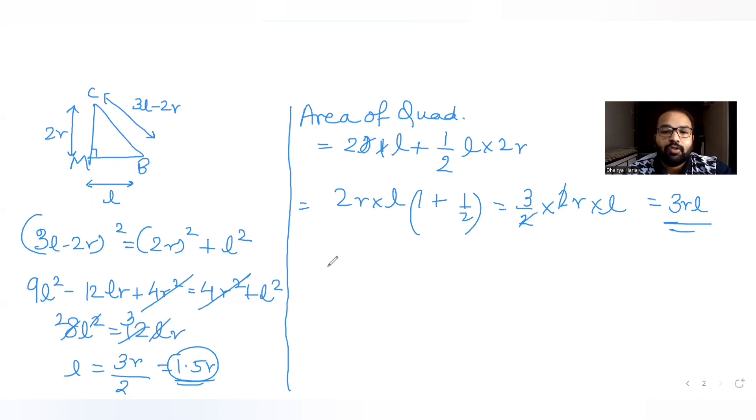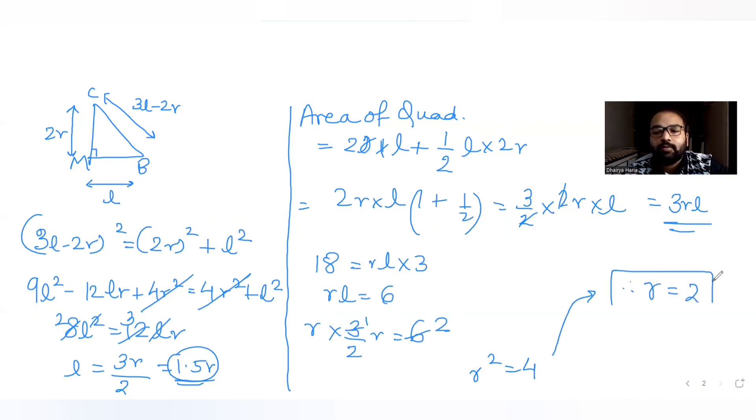Now further, if I want to solve this, I already know area of the quadrilateral is 18 square units. So 18 becomes R into L into 3. So R into L becomes 6. Now when I know this, RL is 3 by 2 times R, that is 6. So I get R² as 4 and that tells me the square root of 4 for a number I get is 2. So square root of 4 becomes 2 and hence I get the radius of the circle that is R is equal to 2. So radius of the circle is 2 units in this.